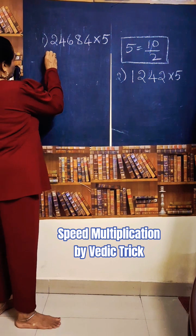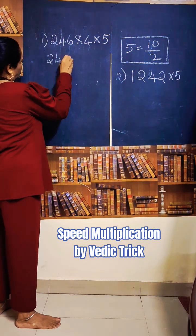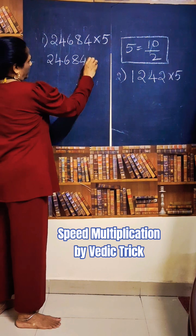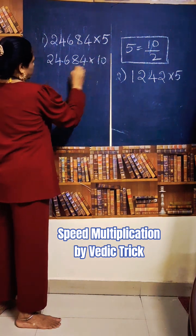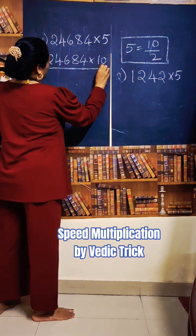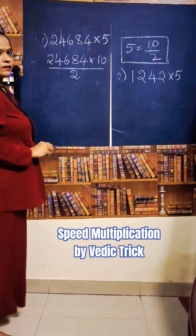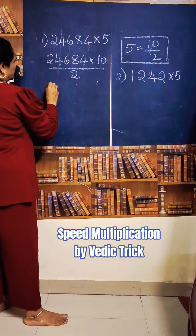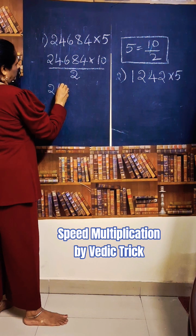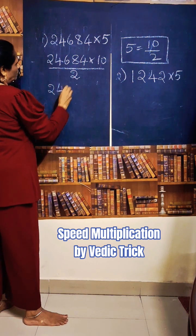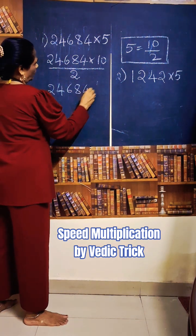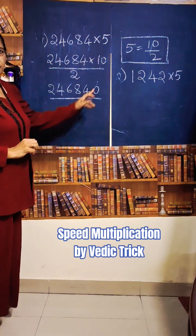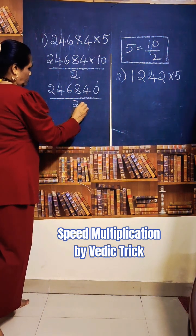What are you going to write? 2, 4, 6, 8, 4 — multiplied by 5. I will write it as 10 by 2. Now, multiplying by 10 is just adding one 0. So 24,684 — add one 0. That means you have multiplied by 10, divided by 2.